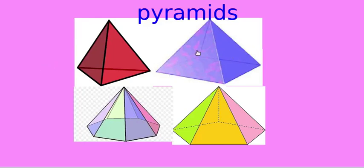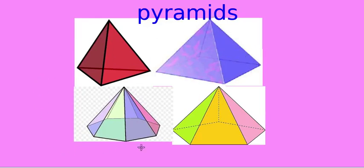For the square pyramid, how many vertices are there? One, two, three, four, five — five vertices. In the pentagonal pyramid, how many vertices are there? One, two, three, four, five, six — six vertices. These are the vertices of a pyramid.